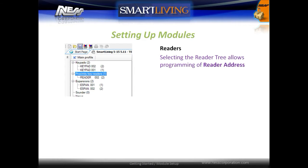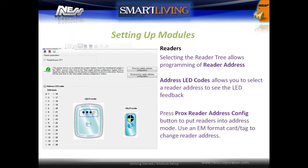Selecting the Proximity Key Readers tree allows programming of reader addresses. Opening the Address LED codes allows you to select a reader's address and see the LED feedback that will be required. Pressing the Proximity Reader Address Configuration button will put all card readers into address setting mode. Use an EM format card or tag to change reader addresses by badging the card against the reader to change the LED feedback. Click the End Proximity Reader Address button when done.